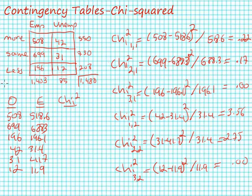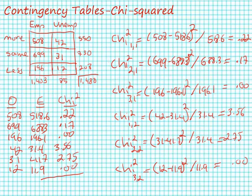We've jumped ahead — I've completed all the calculations. The chi-square statistic for each cell is simply the difference between the observed and the expected, squared, divided by the expected. I've written in all of my chi-square values in the table. Adding all of those values up gives my chi-square statistic for the entire table, which in this case is 6.69. Remember, a large chi-square value makes it more likely we'll reject the null hypothesis of independence and conclude that these two variables are related.